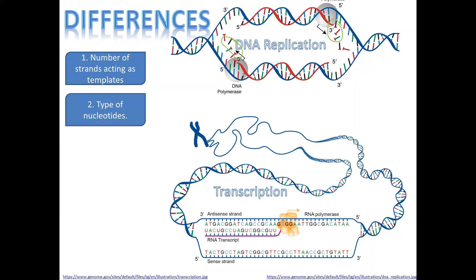Secondly, the type of nucleotides differs. In DNA replication, DNA nucleotides are used — they have a deoxyribose sugar and the nitrogenous base thymine pairs with adenine. Whereas in transcription, RNA nucleotides are used — they have a ribose sugar, and the base uracil pairs complementarily with adenine. The presence of uracil is a sign that the process is transcription.